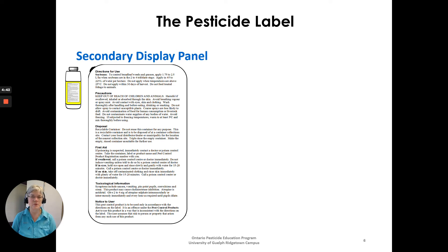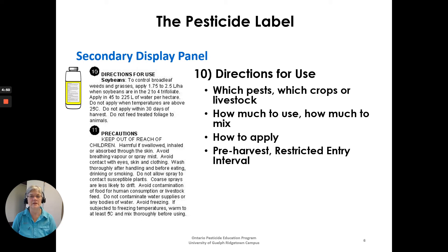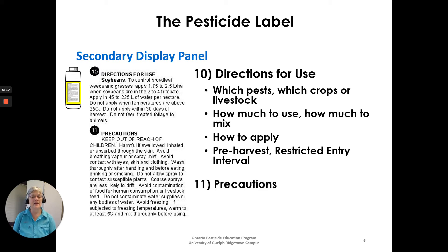The secondary display panel contains the fine print. Number 10 is directions for use — which pests, crops, or livestock it can be used on, how much to use, how much to mix, how to apply, and pre-harvest intervals and restricted entry intervals. Number 11 is precautions — including 'keep out of reach of children' and details on personal health hazards and environmental hazards.